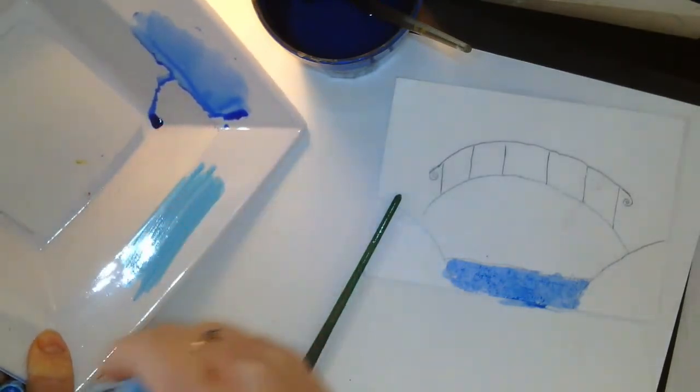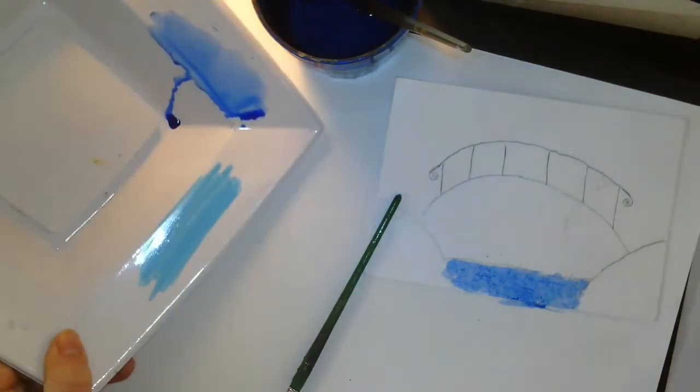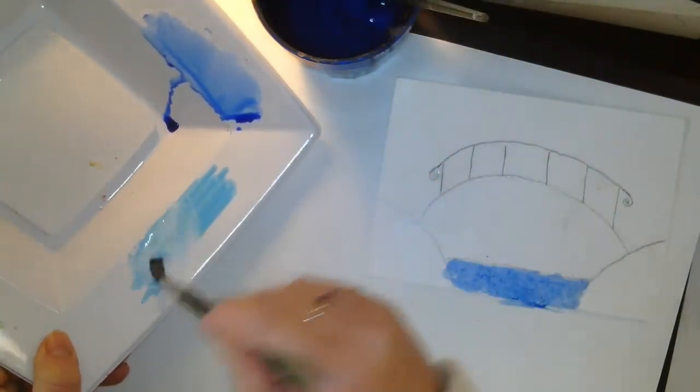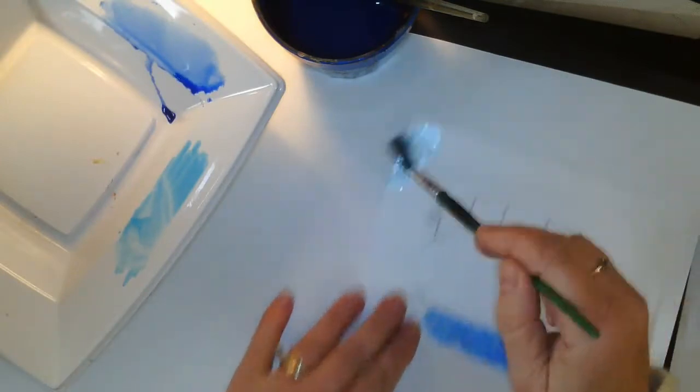You can even see, look, that's actually turned into a puddle of paint. And I can tap my brush, get it wet, activate it, and I can start painting with it.